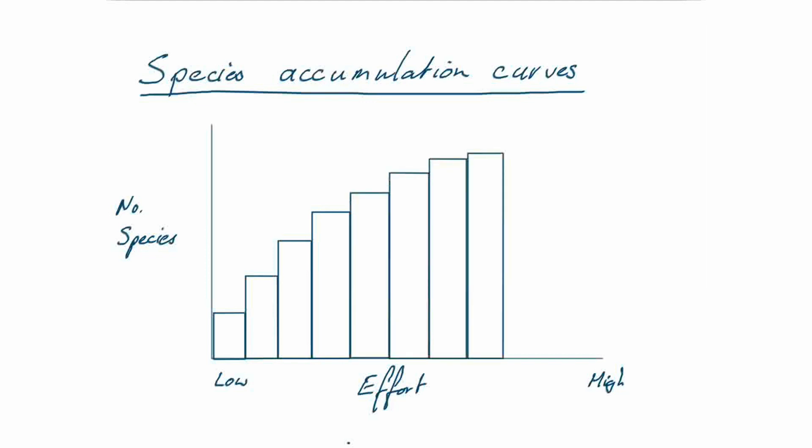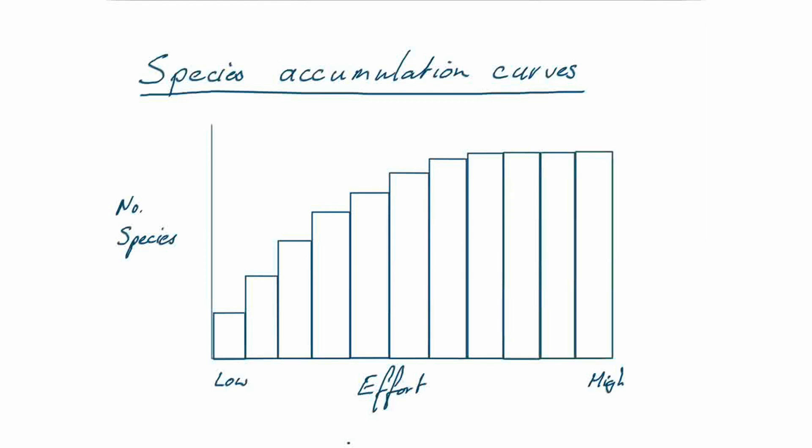You can see that the number of new species we find with each added piece of sampling effort is declining, until we reach a point where we don't find any more species at all. At this point, where we're not finding any more species despite increasing sampling effort, we can think that we've found all of the species present in that community. Knowing that you've found all the species — and also knowing that you haven't — is quite an important thing. Once we've drawn a graph like this, we can put a line through these data points, and that line is our species accumulation curve.